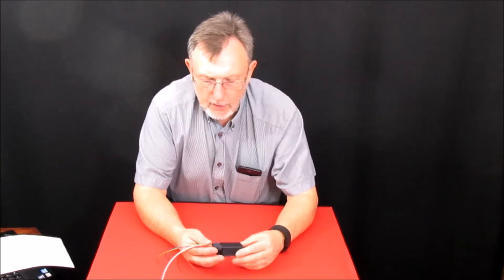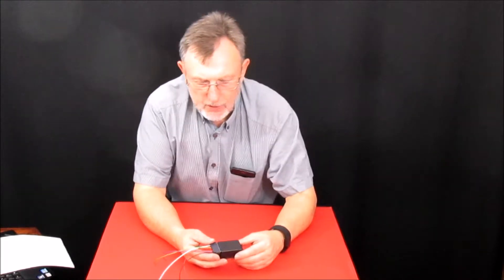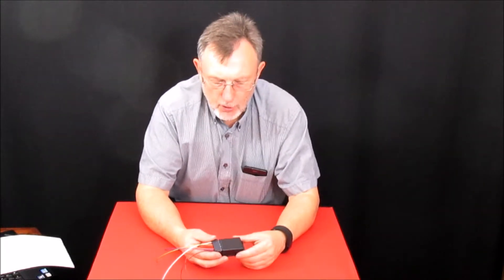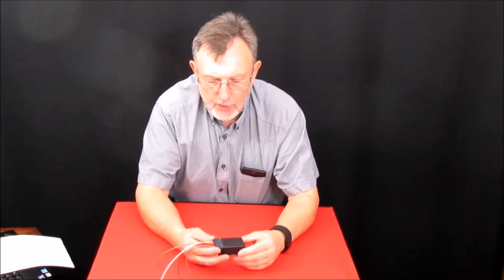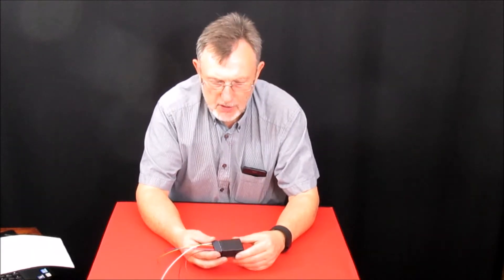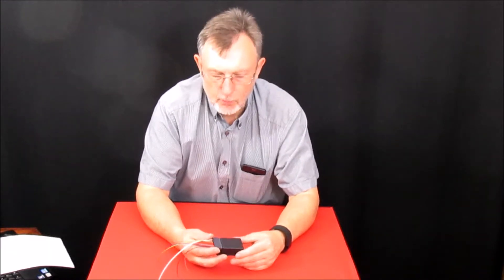The second thing it can do, it can damp the needle. When it's a fuel gauge that's known as anti-slosh. It's adjustable so you can have a small amount of damping or you can damp it so it would take several minutes for the needle to go from one end to the other.